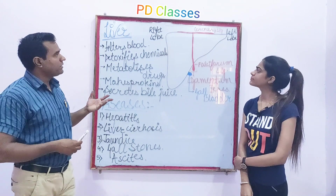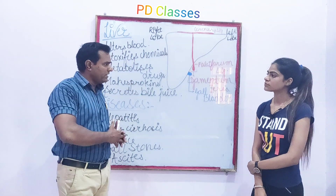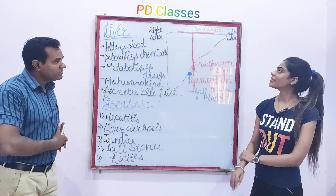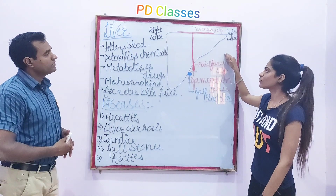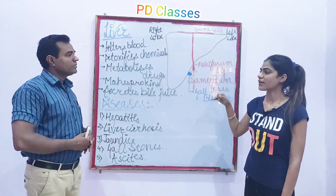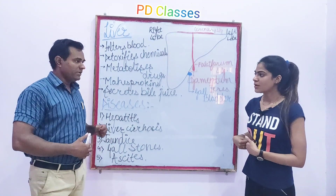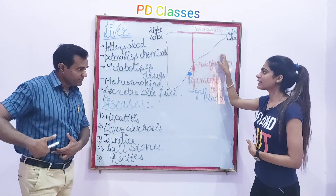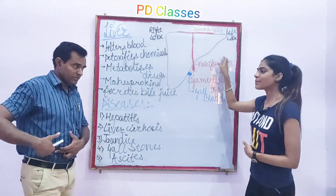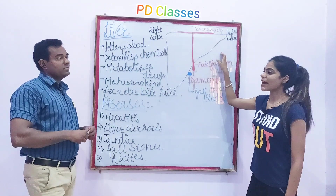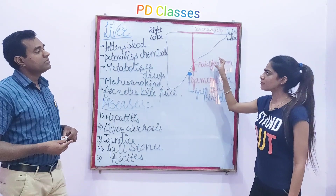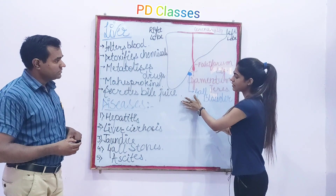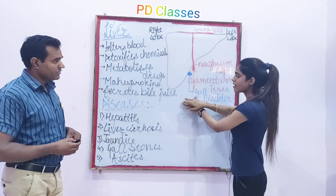Where is the liver situated? Its major portion is covered by the ribs. It is situated below the diaphragm, in the right hypochondrium, meaning the right upper region. But we can feel it by percussion — a medical term meaning we tap in different areas with our hands to feel the liver and note its boundaries.